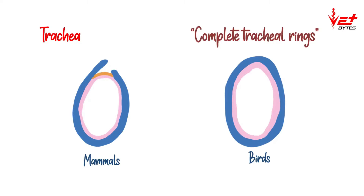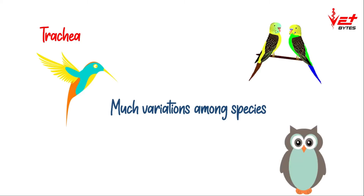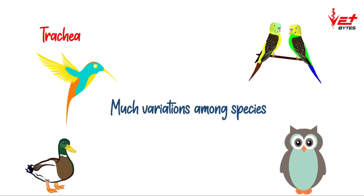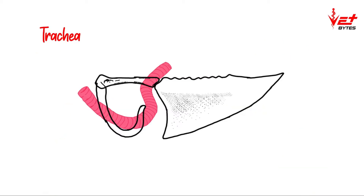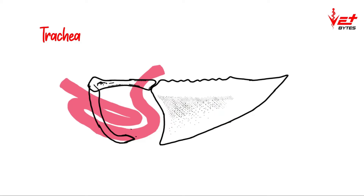There are much more differences from one class of birds to another. The shape of the trachea is bent in case of the black swan, the trachea is looped in case of the hooper swan, and the trachea is coiled in case of the white spoonbill.